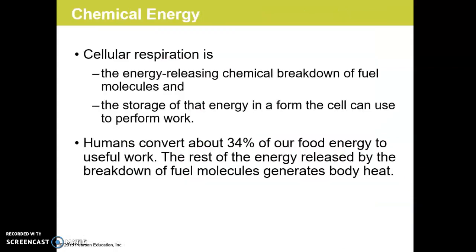Cellular respiration is something we're going to focus on a lot more in the next chapter. It is the process by which glucose is broken down to release energy and produce ATP, which is a form of energy that cells can very easily use to carry out all of their chemical reactions, move things in and out, and do anything needed to maintain homeostasis and sustain life. In humans, we convert about 34% of the energy stored in our food to useful work. The rest is released as heat and generates body heat, just like combustion and cellular respiration generate heat.